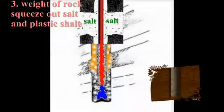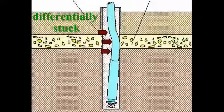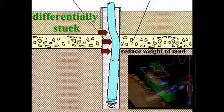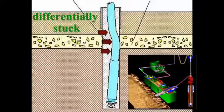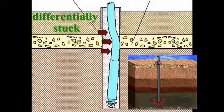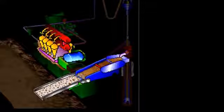Once the pipe becomes stuck, for whatever reason, it is necessary to free it. The cause for the pipe becoming stuck in the first place must be found. If the pipe is differentially stuck, then the first approach would be to reduce the weight of the mud and eliminate the overbalance. Of course, this is only possible if there are no concerns about a permeable zone kicking. If reducing the mud weight and eliminating the overbalance is not possible, then another approach might be tried.